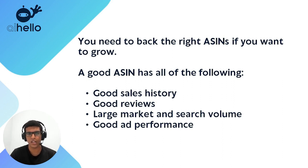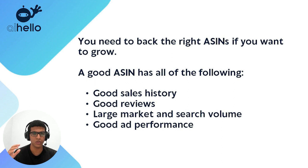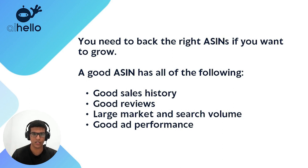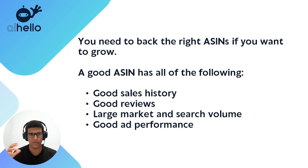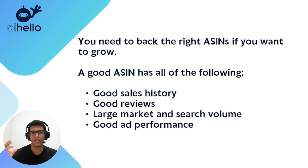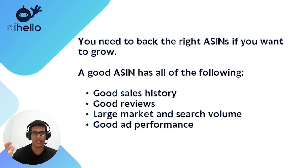What I look for is something I call asymmetric ASINs — ASINs that contribute a larger percentage of total sales than they do of total budget. Something that spends 20% of your ad spend but contributes 40% of total sales is very ad efficient. There's also more alpha in them — the percentage of extra return you can get compared to other ASINs. You can probably get a higher alpha by turning a 5% TACoS ASIN into a 15% TACoS ASIN than by moving a 15% to a 20% TACoS ASIN.